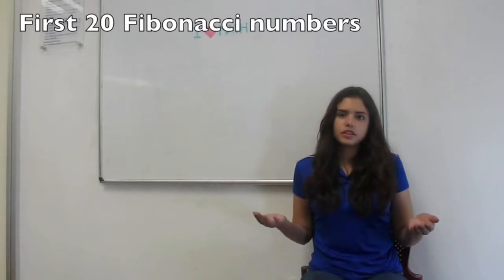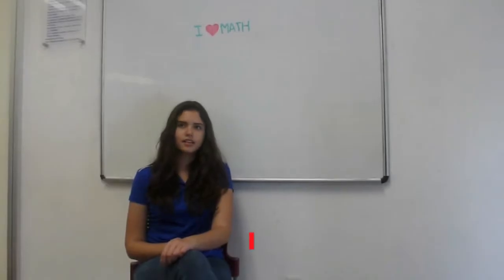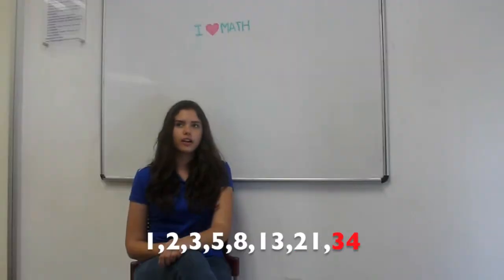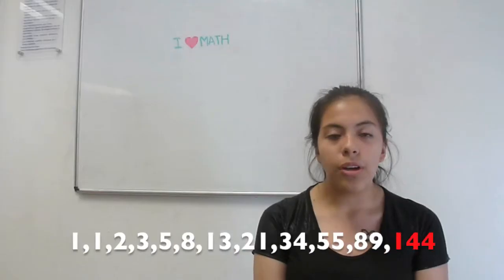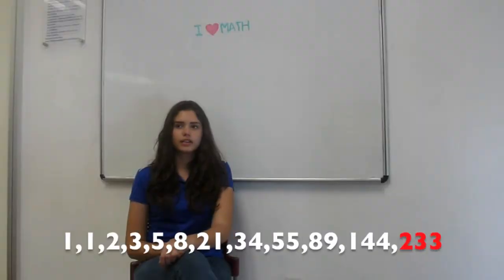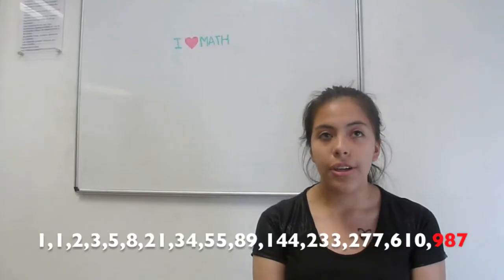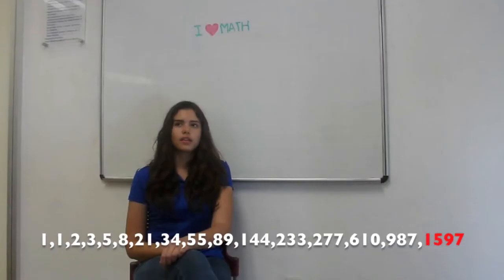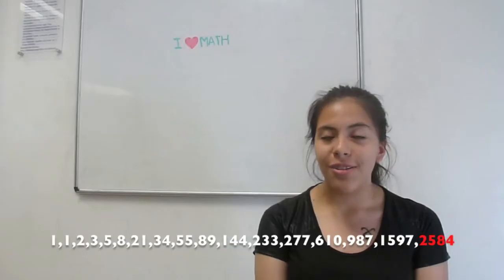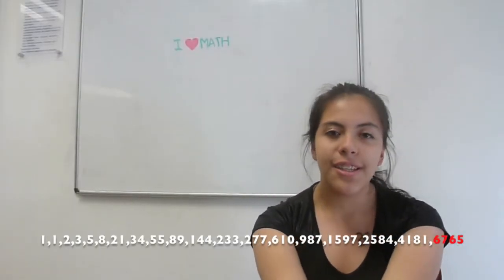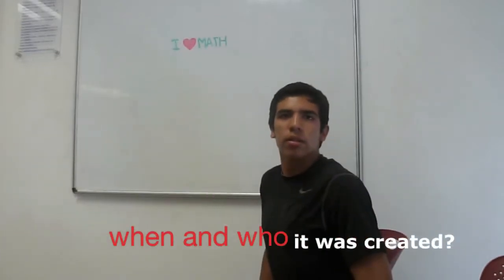But which are the first 20 Fibonacci numbers? 1, 1, 2, 3, 5, 8, 13, 21, 34, 55, 89, 144, 233, 377, 610, 987, 1597, 2584, 4181, 6765.